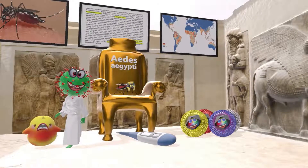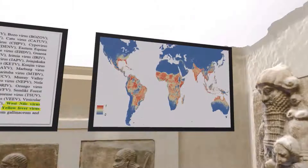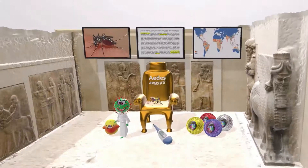There is a thermometer on the floor here, perhaps to remind us that fever is a common manifestation in all of these diseases. And on this screen you'll see the current distribution of the Aedes aegypti mosquito around the world. I hope you enjoyed this scene on the Aedes aegypti mosquito. Take care.